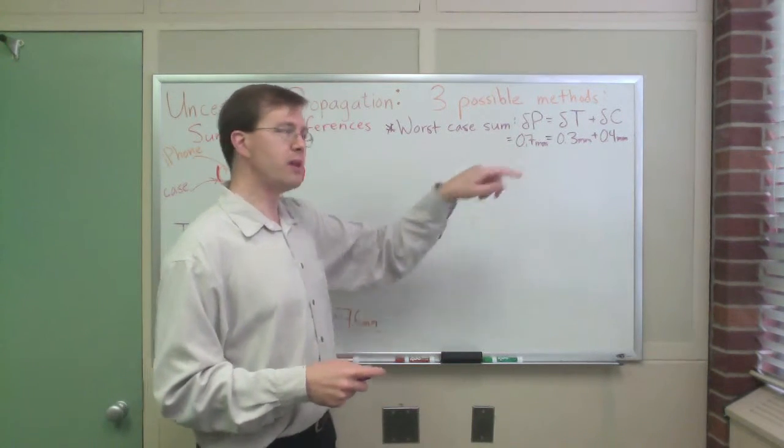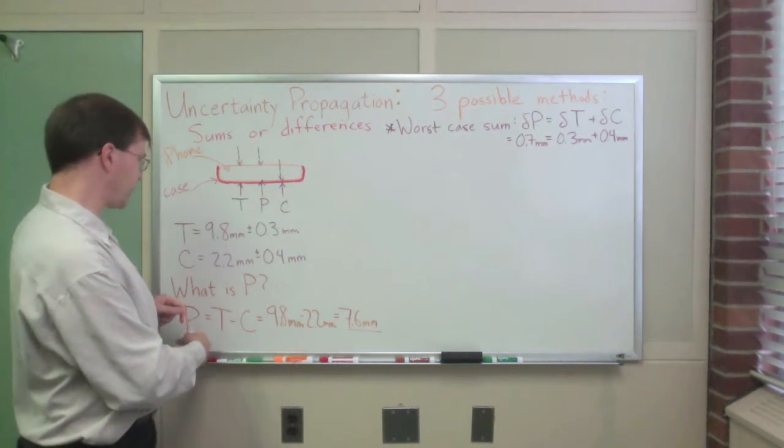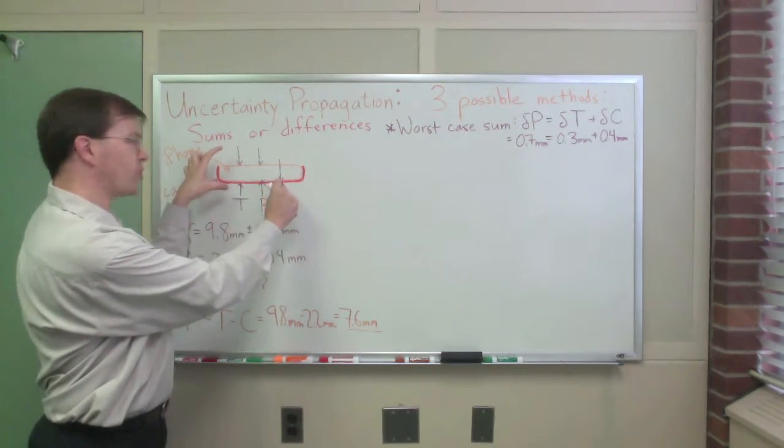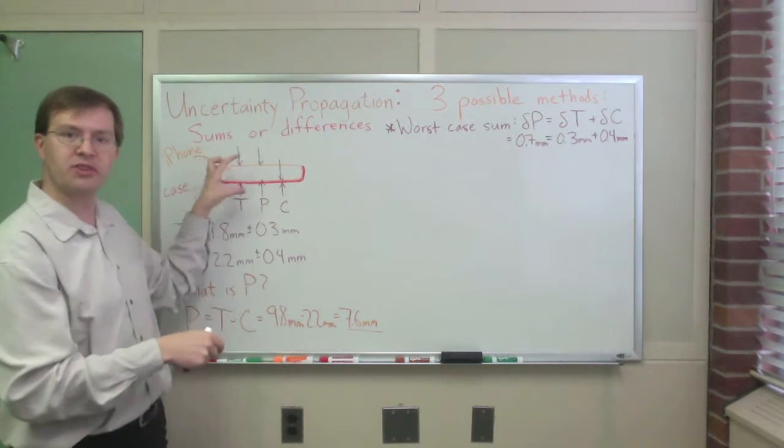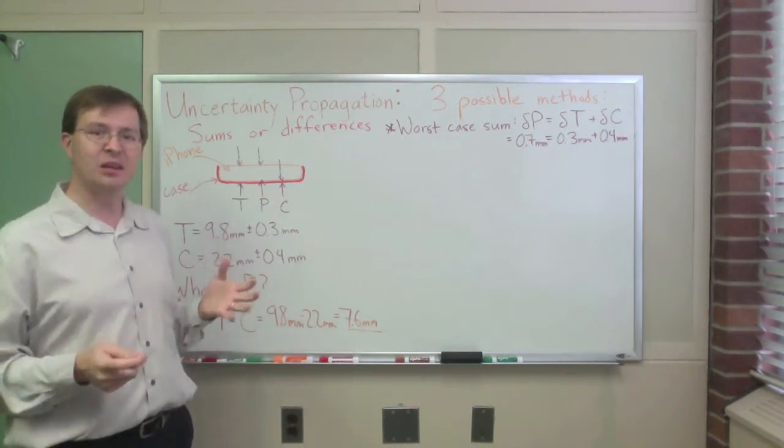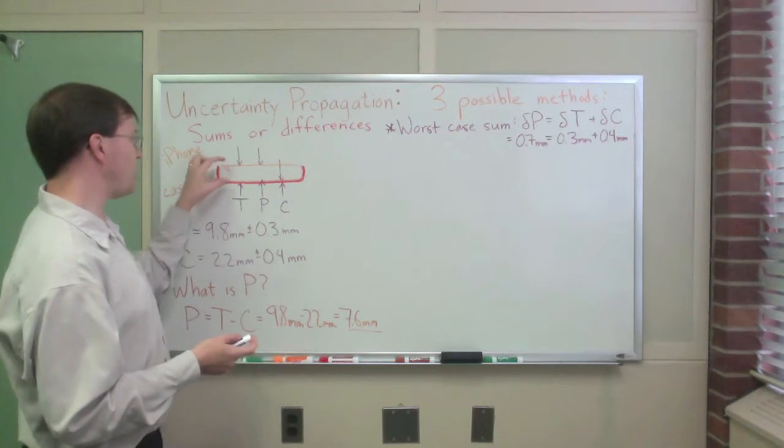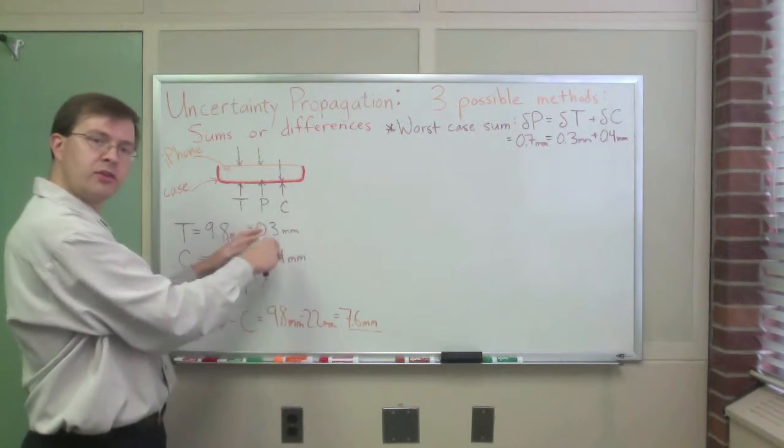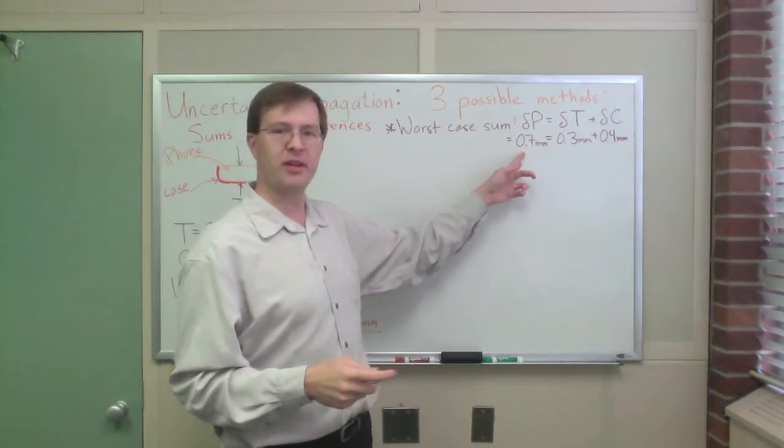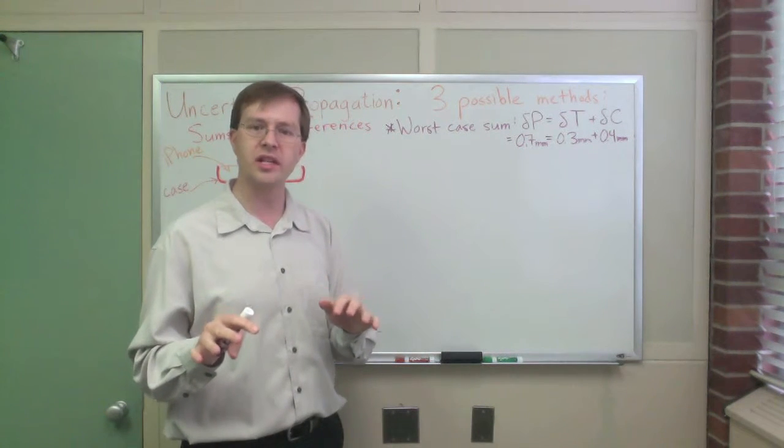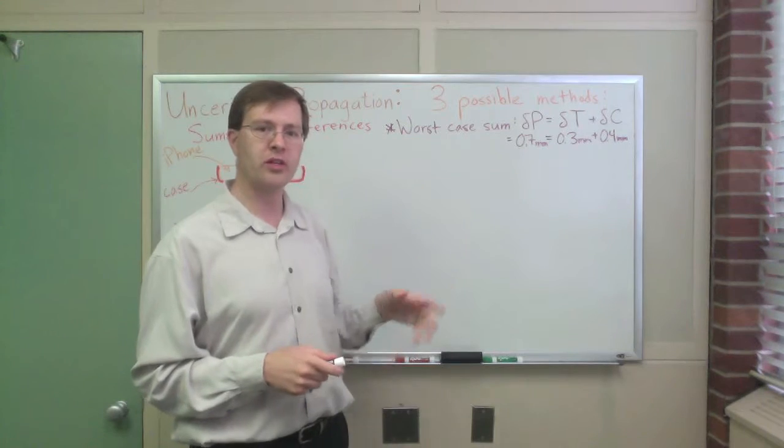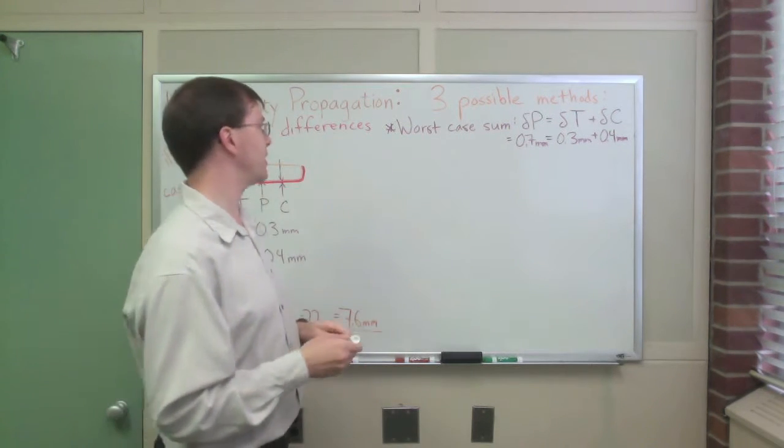So the problem with this estimate is this is the worst case scenario. Because that's saying, what would happen if I'm looking for the thickness of the phone, what would happen if I measured t to be 0.3 too big, and at the same time I measured c to be 0.4 too small? Those would both combine to make the phone seem as thick as possible. So that's this worst case scenario. Now, that has completely ignored the possibility, the likelihood in fact, that maybe I'll measure the phone to be too thick and the case to be too thick. So those errors might compensate for each other and cancel out. That's saying that this 0.7 millimeter is really very pessimistic. We can do much better than this by estimating more cleverly. So that's the worst case scenario.